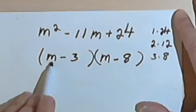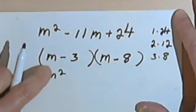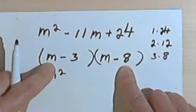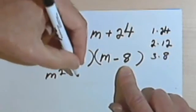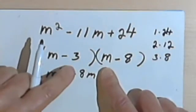So let's do that. Foiling this back, I have m times m will give me an m squared. Foiling this first times the last, or the outsides, will give me an m times negative 8 is negative 8m.